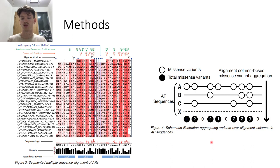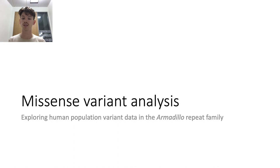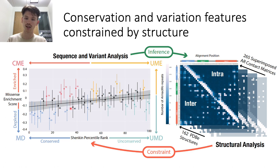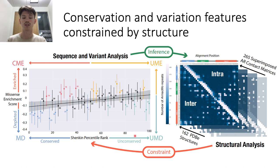Once the variant sparsity problem was solved, we wanted to understand the relationship between sequence variation across species, including human, and sequence variation within a single species — in this case, human. Let's explore this relationship in armadillo repeats. On the left, the x-axis shows the Schenkon divergence score percentile rank, which is a measurement of amino acid conservation in an alignment. On the y-axis we have the missense enrichment score, measuring how an alignment column is enriched above or depleted below the regression line for missense variants relative to other positions in the alignment. Each data point represents a column in the alignment. Sites under selective pressure — constrained in the human population — highlight the same positions with structural and functional importance that dictate domain evolution as observed in the protein residue conservation.